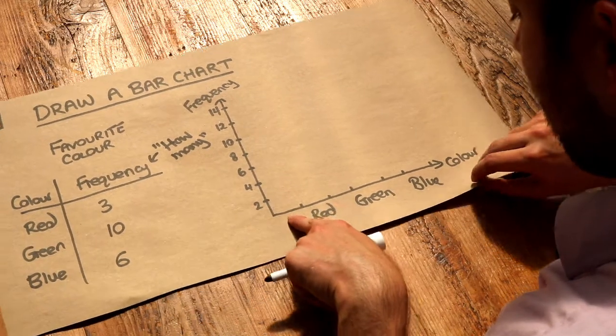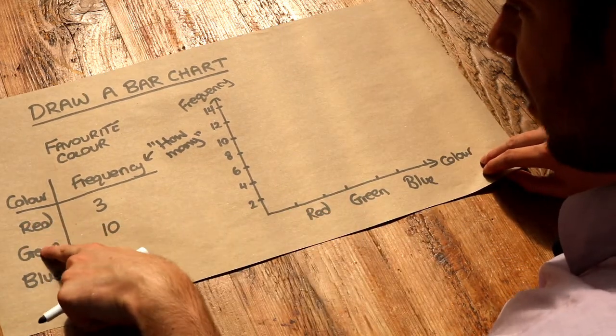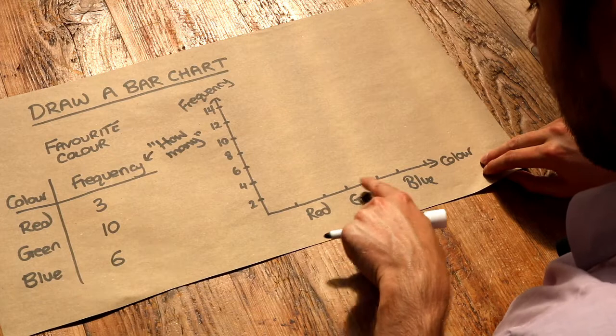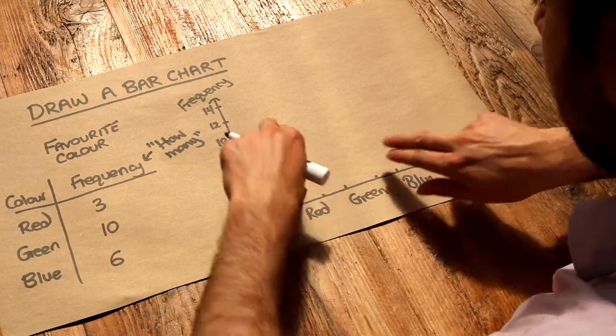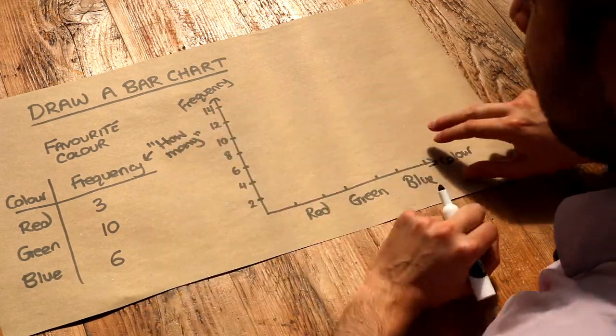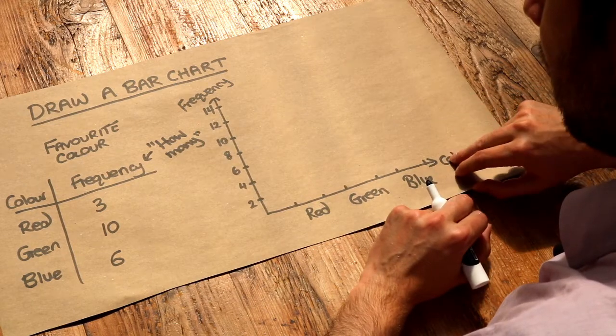So here we need to draw this bar chart. Notice by the way we have the different values of different categories here as kind of separated values, and the bars shouldn't be exactly next to each other. There should be a space between each bar.